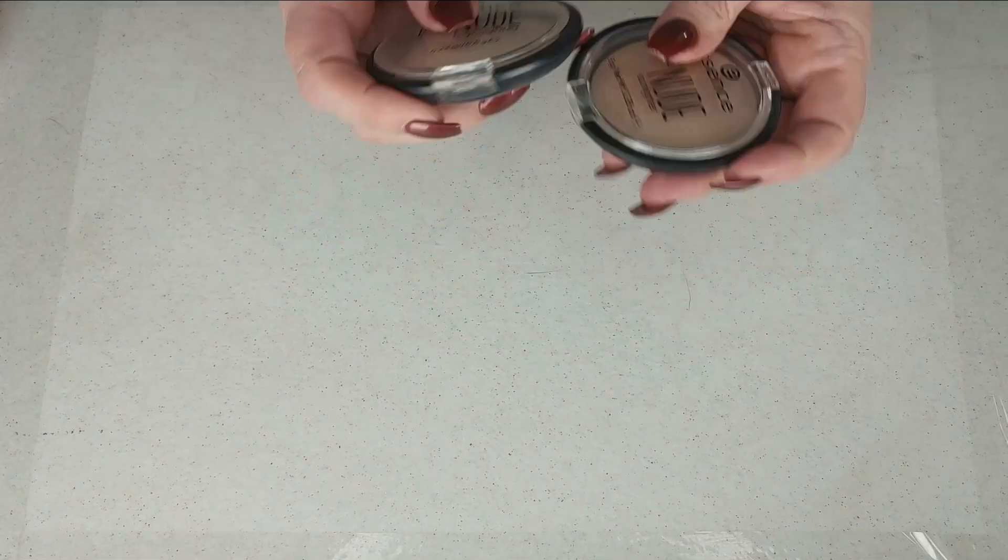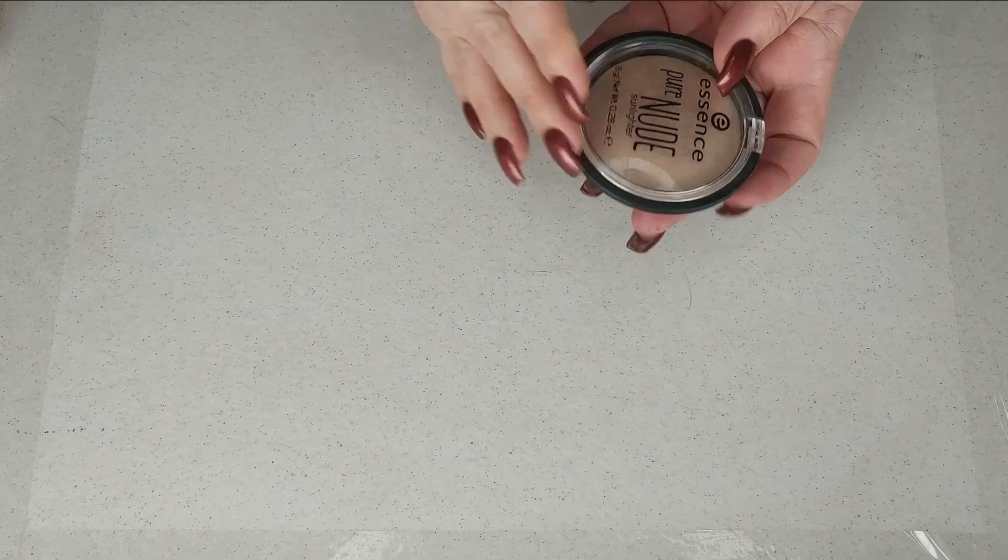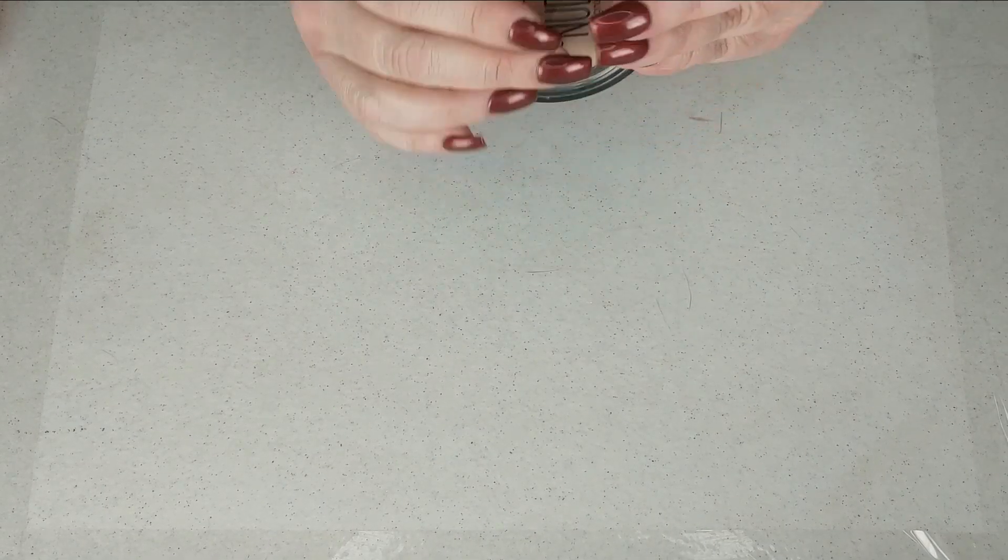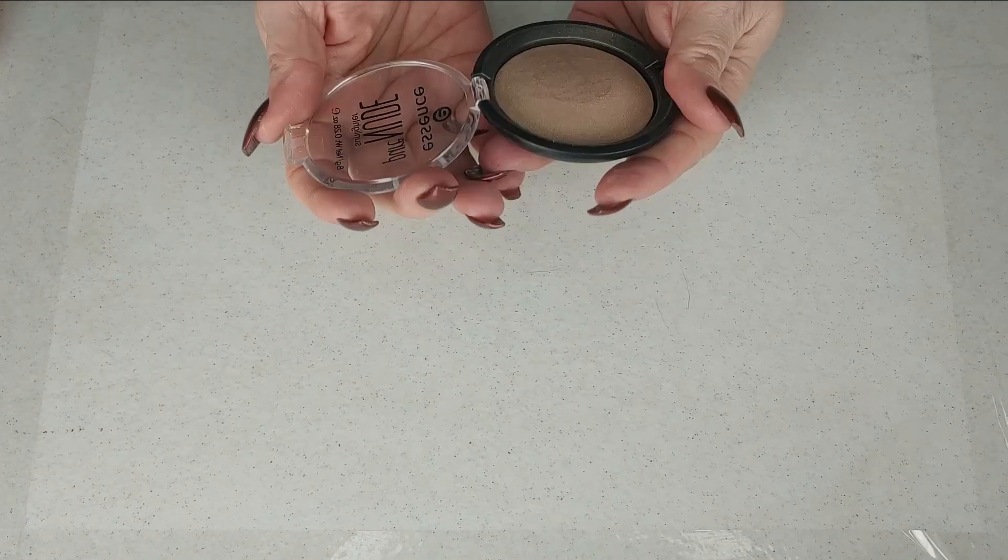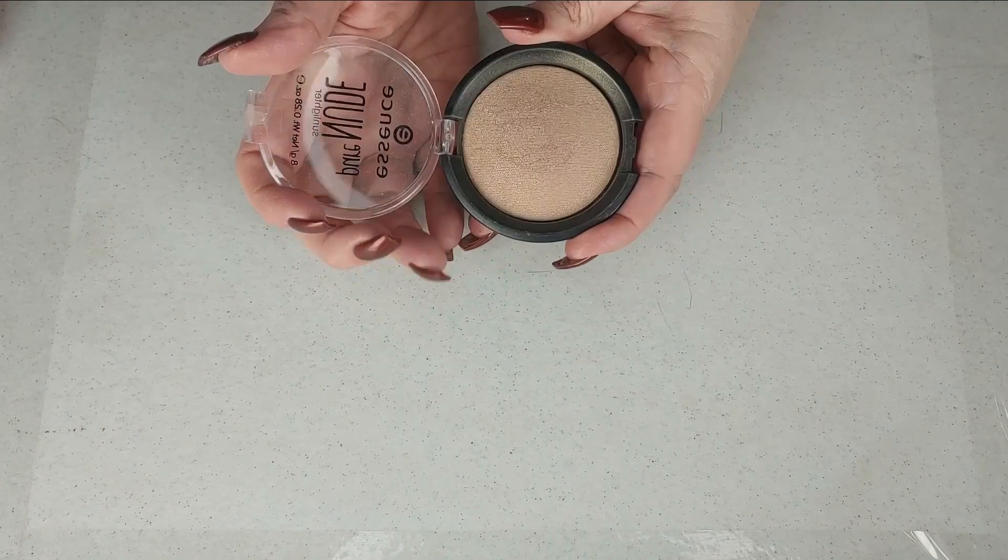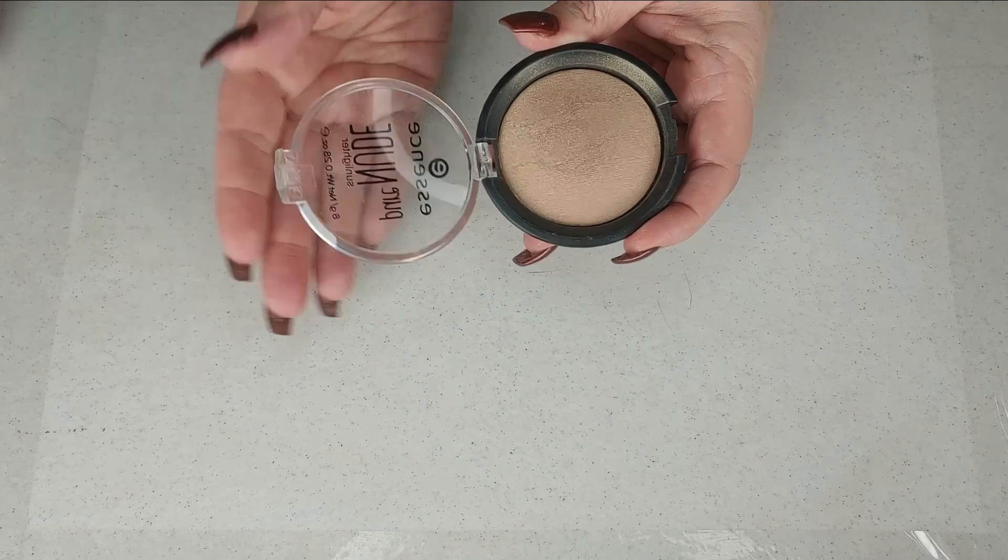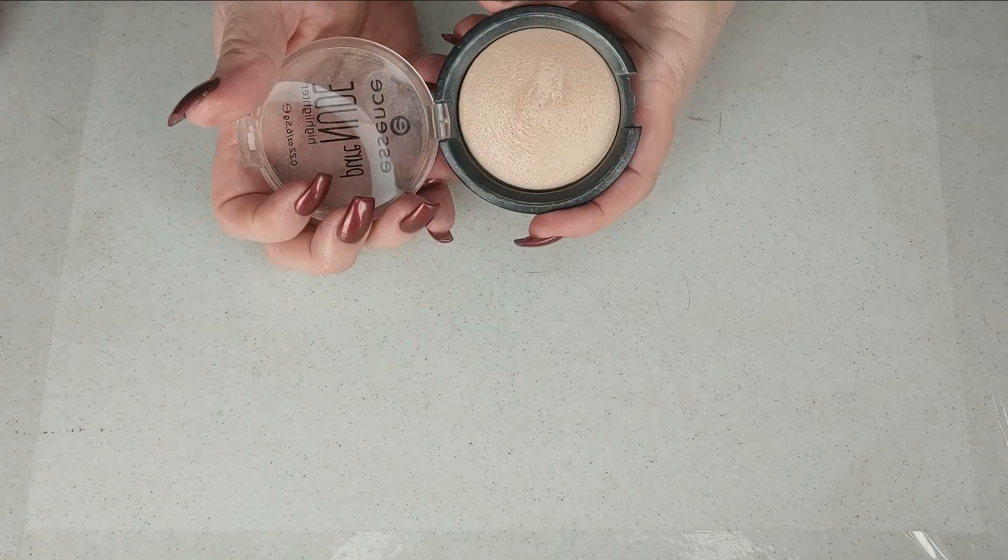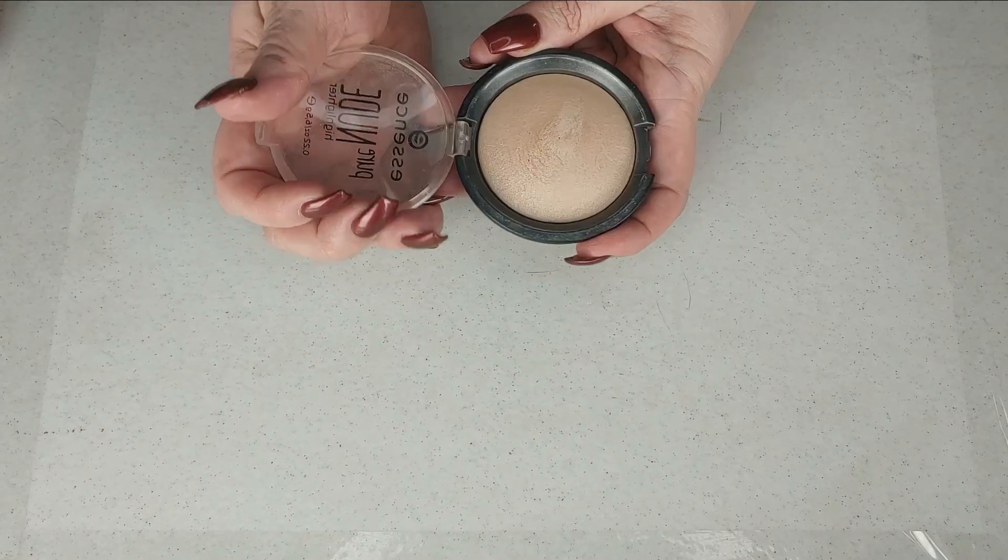Okay next up are both from Essence and one is called a highlighter and this is called a Sunlighter, this is called Be My Sunlight. It's a little darker than the highlighter but they both give just such a really nice natural lit from within glow and I like them a lot. Those are one of my favorite for just a natural look.